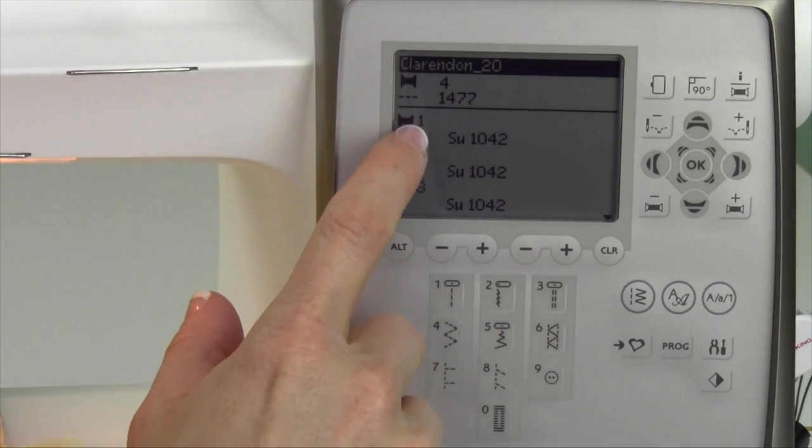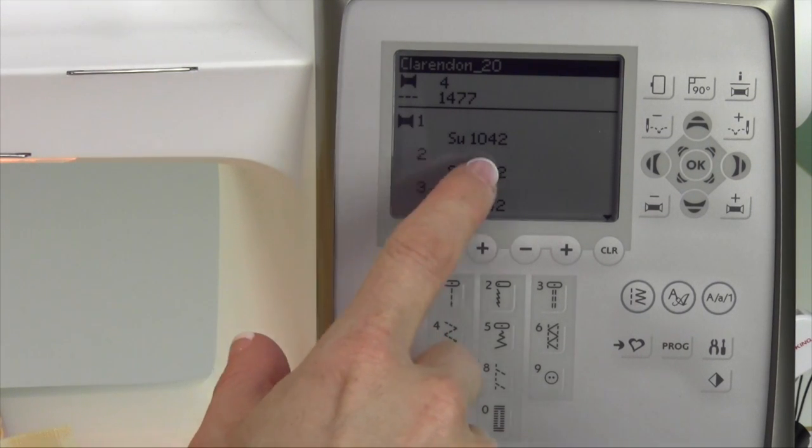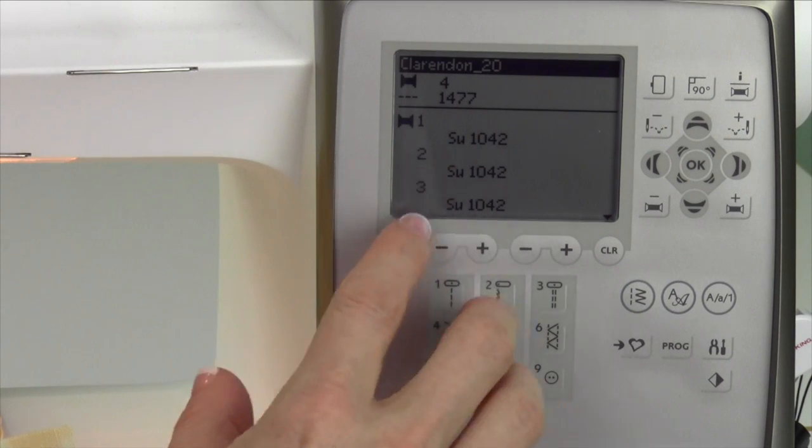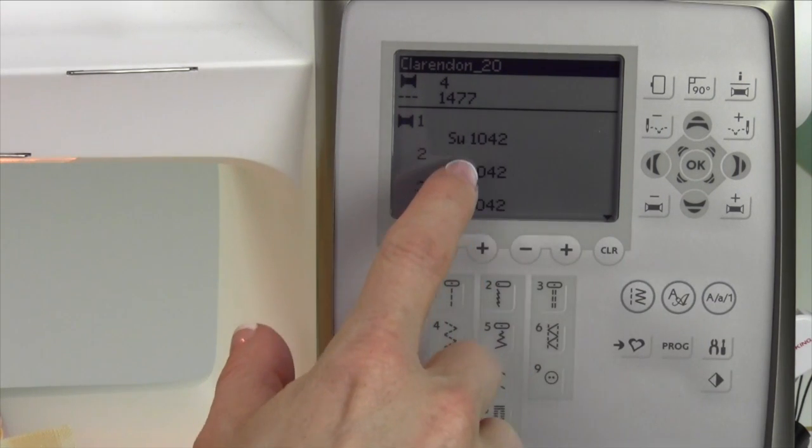With the design that actually is going to stitch, the spool is always next to whatever color it's going to stitch. Then the colors that were saved for this particular design will show up.